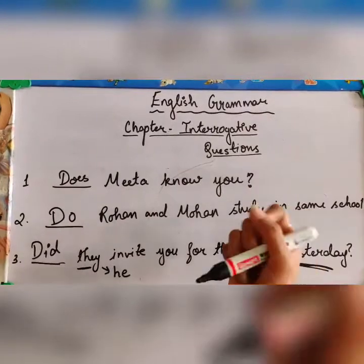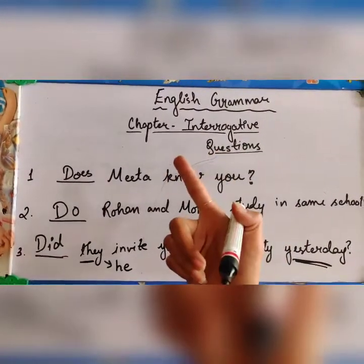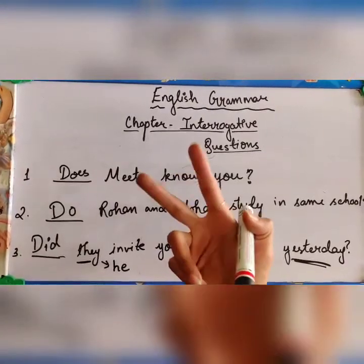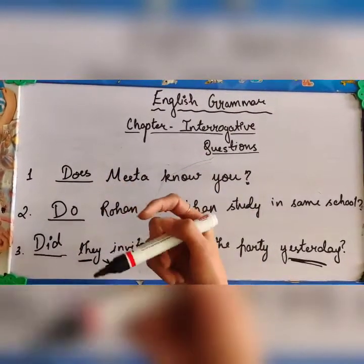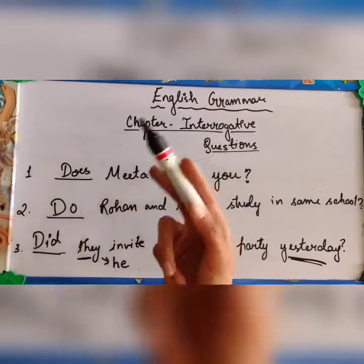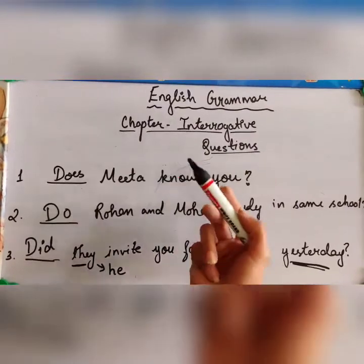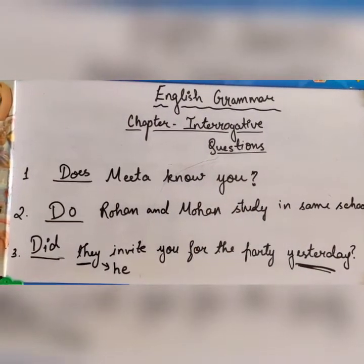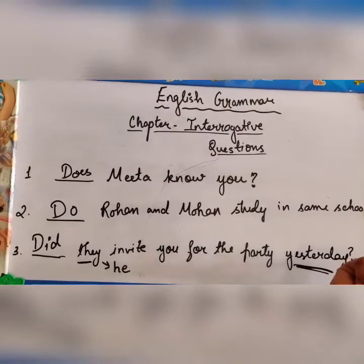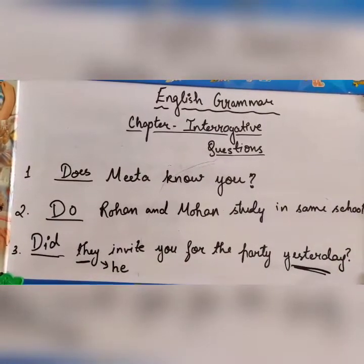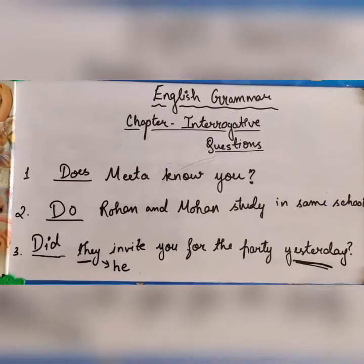'Does' is used for a singular person, 'do' for a plural person, and 'did' when we have to ask a question about the past tense — whether to a singular or plural person. This was all about interrogative questions. If you have understood, please hit the like button and subscribe to my channel to get updates.